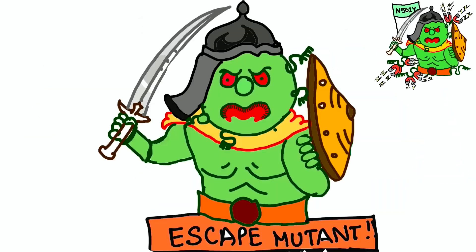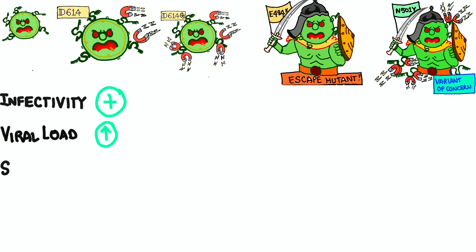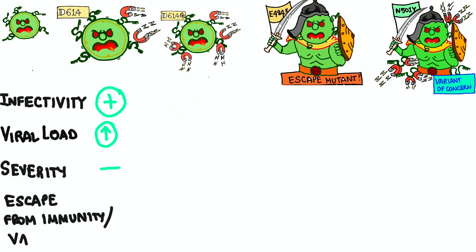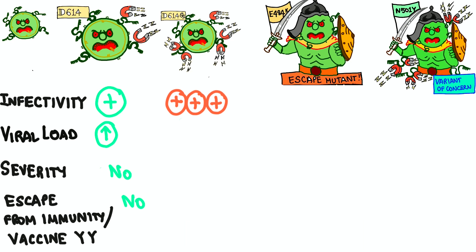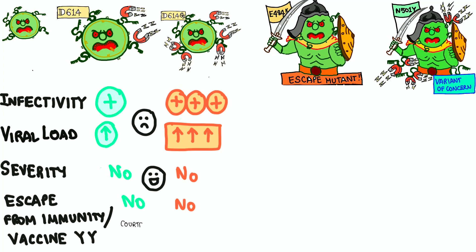Comparing all COVID variants: First, D614 — developed few magnets on its surface, so infectivity and viral load are increased, but severity is not, and it cannot escape immunity or vaccines as it has no shields. Next, D614G — multiple magnets, super lazy virus, so viral load and infectivity are excessively high, but it doesn't cause severe disease and also cannot escape vaccine immunity as it has no shields.